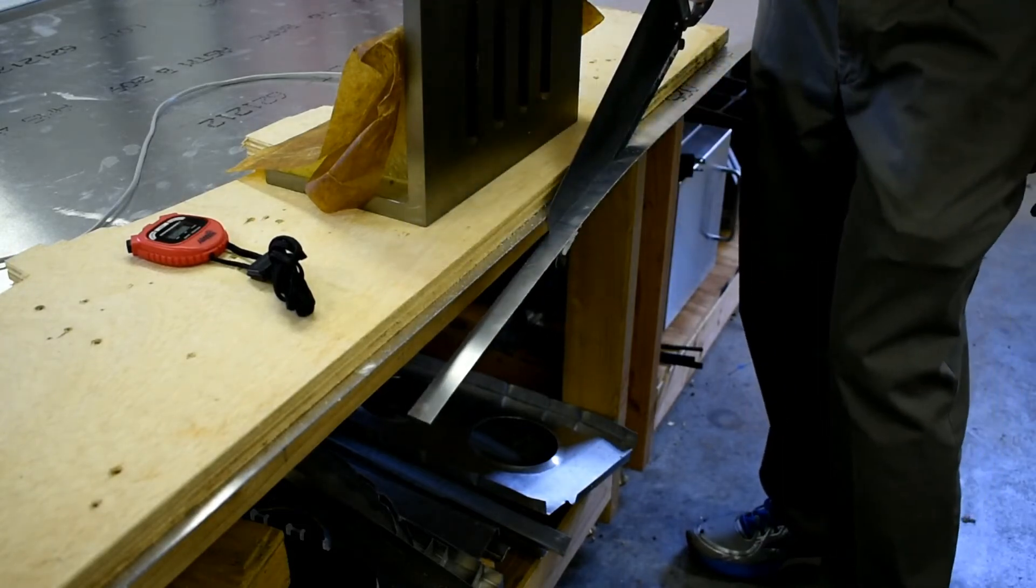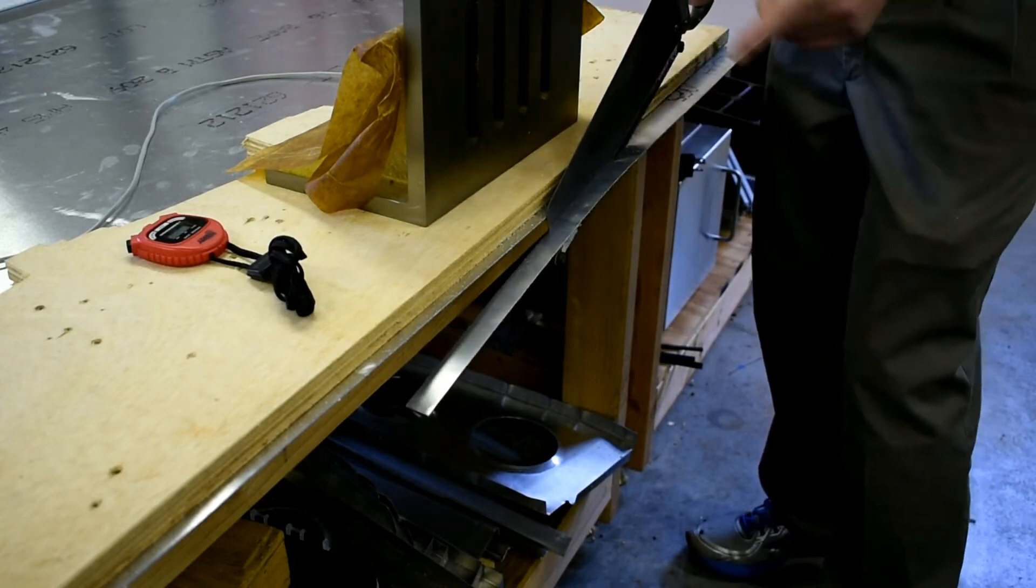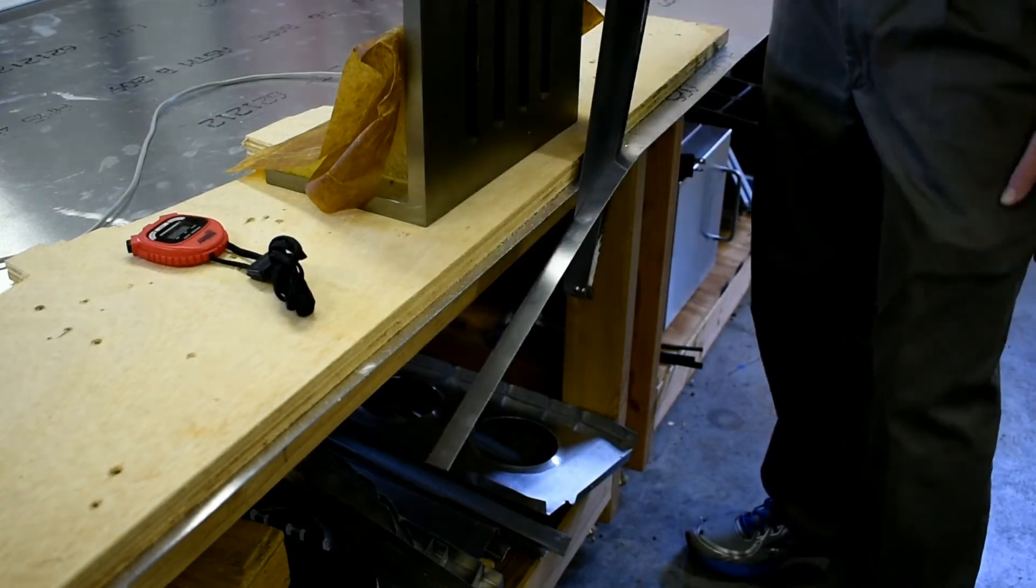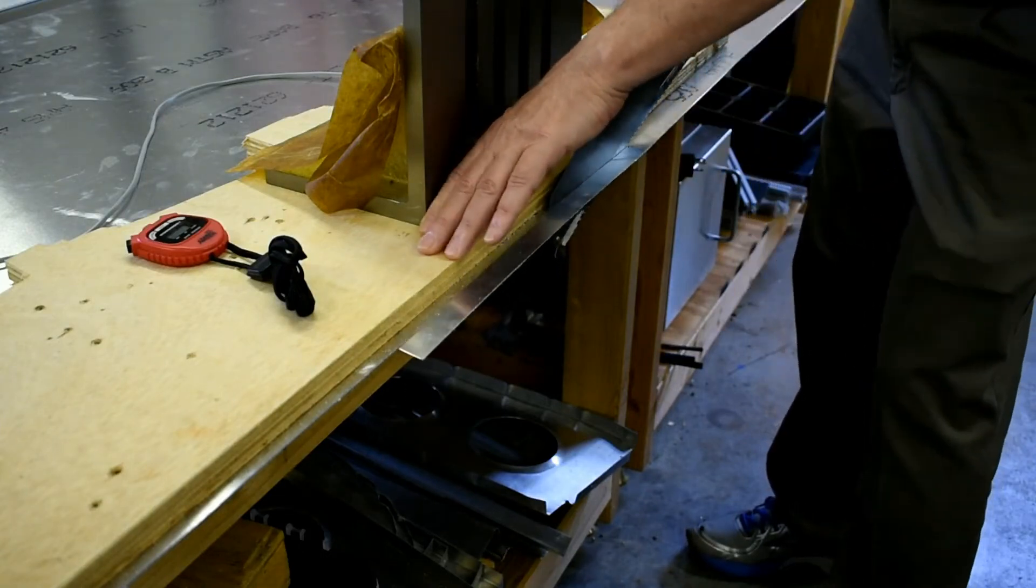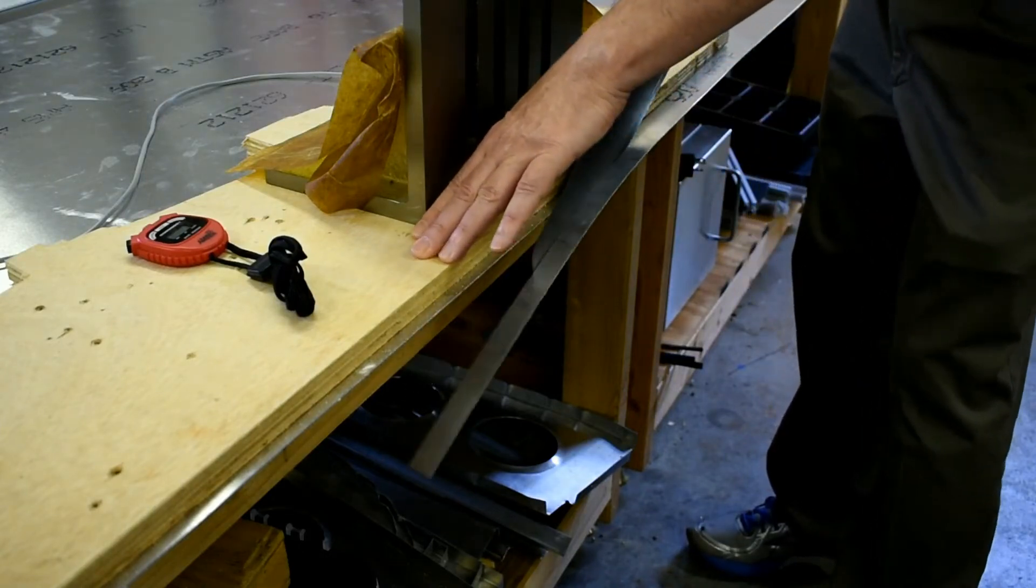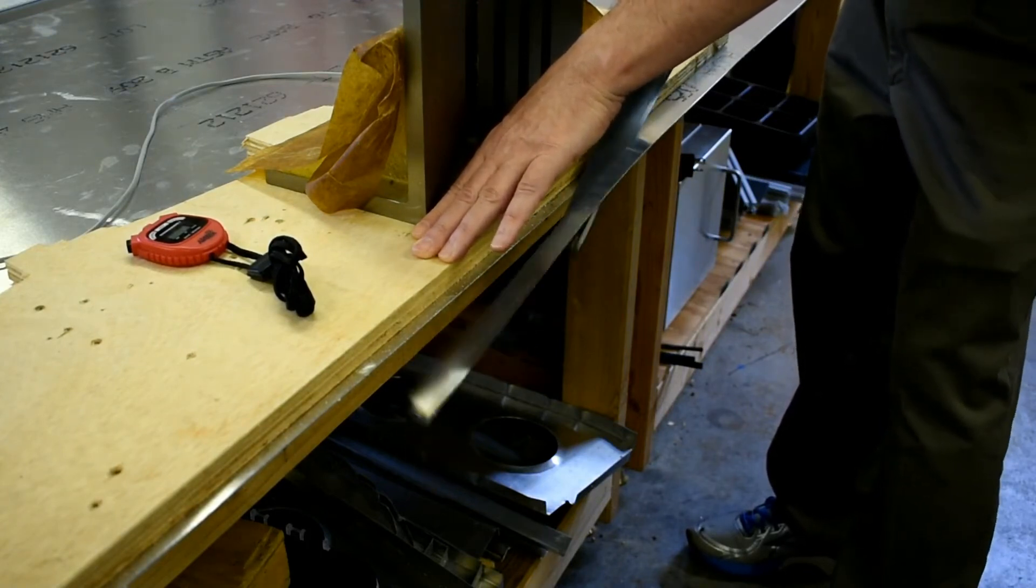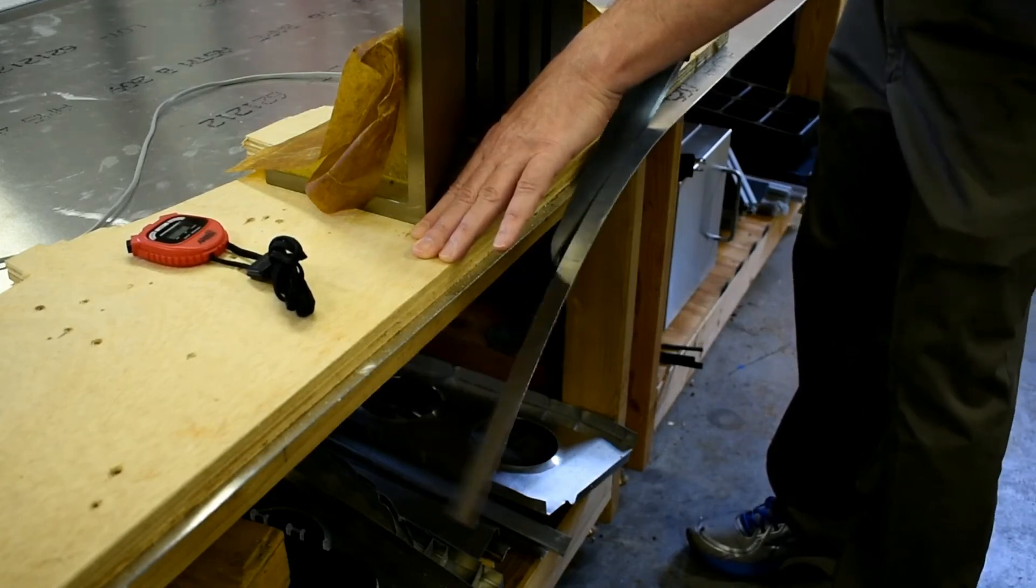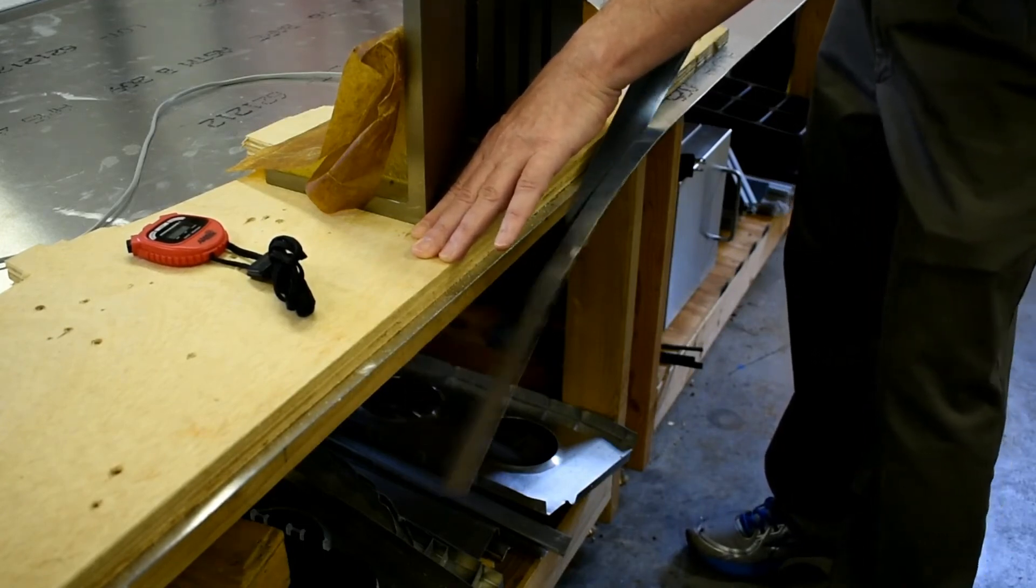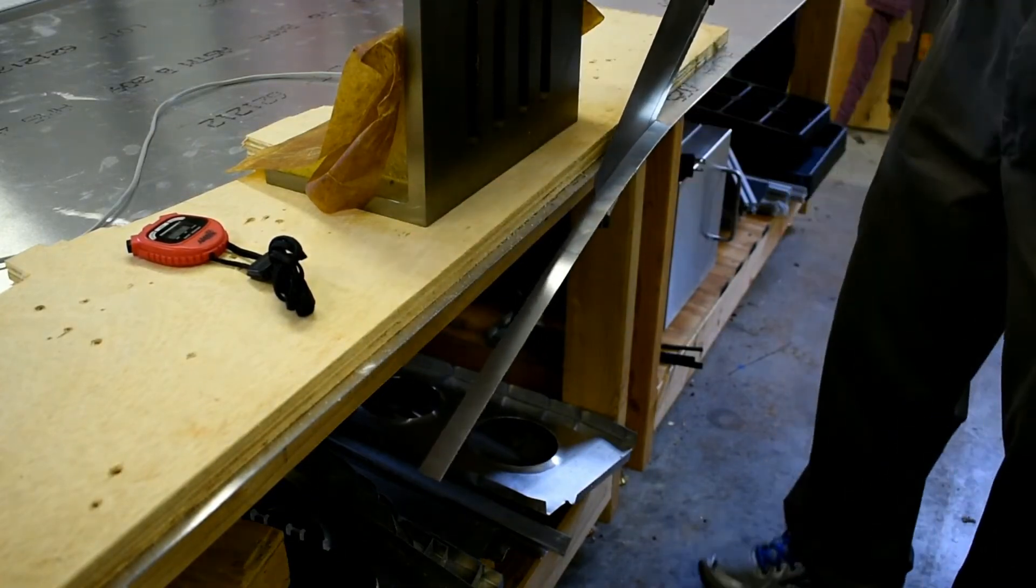And of course, when you're cutting thin pieces of metal like this, you want to have the blade at a very shallow angle so that you're engaging more teeth. If you go straight up and down, of course, you'll have all sorts of problems with snagging.